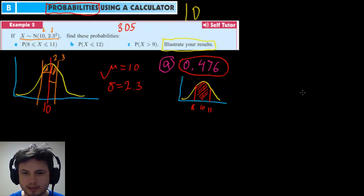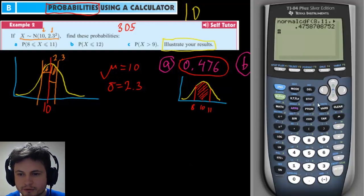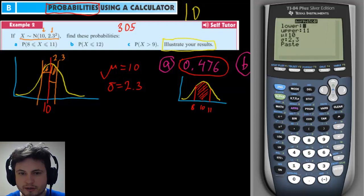So let's actually do question two or question B and see what we get. So go back to the calculator, click on second vars go to number two and here the lower value for us is not defined. So it's actually less than or equal to 12 but we don't have the lower value. So we're going to be using a super ultra small number for this.